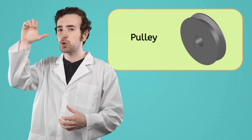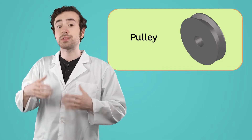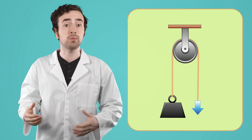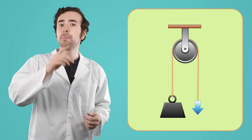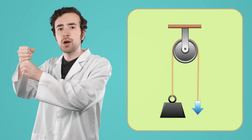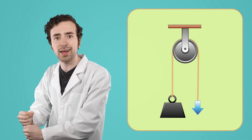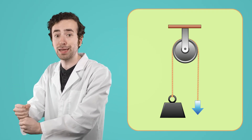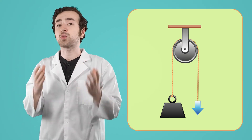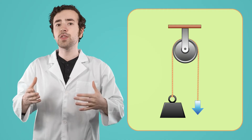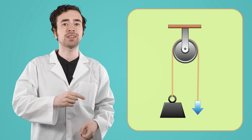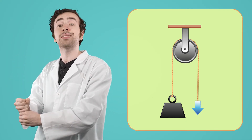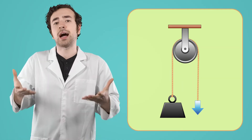A pulley is another simple machine that also uses a wheel, only in a much different way than with a wheel and axle. This wheel has a special groove around its edge that's designed to hold a rope or some chains. If we want to lift an object using a pulley, we can tie a rope to it, put the rope over the wheel, and then just pull the rope down from the other side to lift the object. Pulleys are great at redirecting force. Even though it will take the same amount of force to lift this object with a pulley, pulling down on something is usually a lot easier for people to do than lifting an object up themselves.